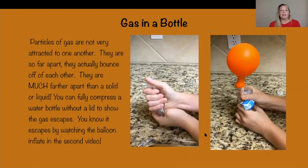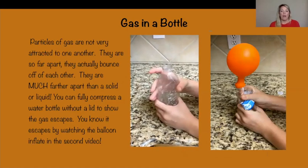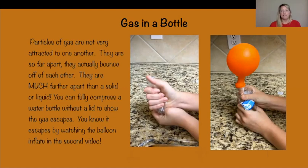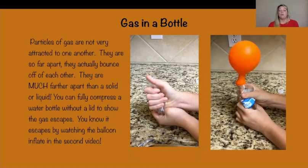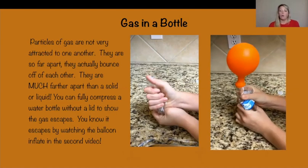The last one is gas in a bottle. Particles of gas are not very attracted to one another. They are so far apart they actually bounce off each other — much farther apart than a solid or liquid. You can fully compress a water bottle without a lid to show that the gas escapes. As we compress it and let it go, you will see the water bottle compress and expand. You can see the gas is escaping by watching the demonstration where the balloon inflates as we compress the bottle and deflates as we let go.